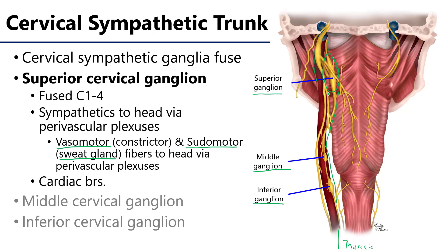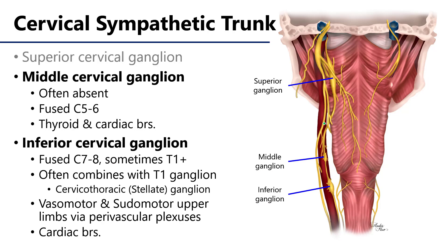Moving down the cervical sympathetic trunk, we come to the middle cervical ganglion. The middle cervical ganglion is quite variable — in fact, most of the time it is absent. When it is present, it represents the fused ganglia of levels C5 and C6. The middle cervical ganglion sends branches to the thyroid gland as well as the cardiac plexus.